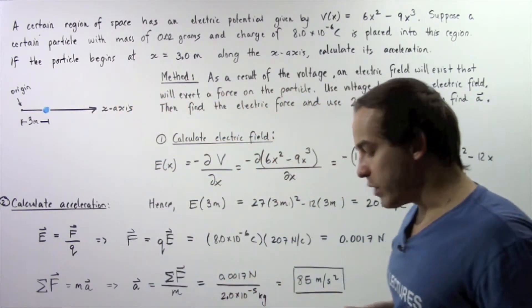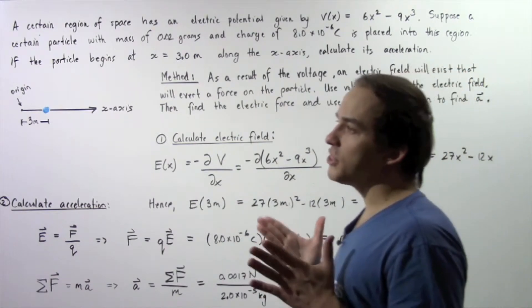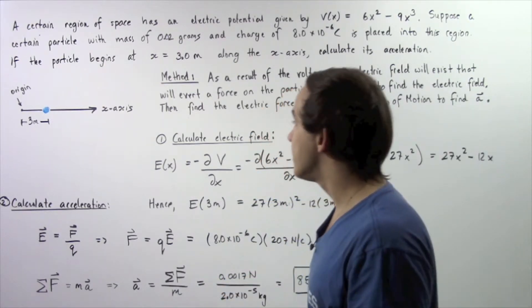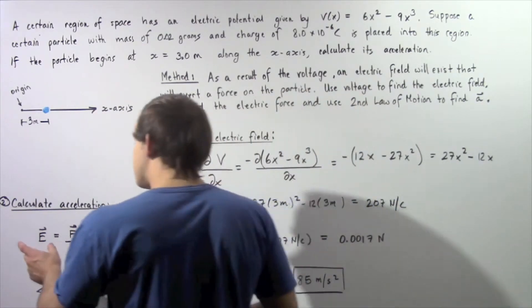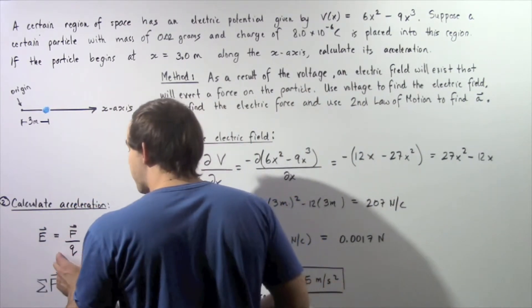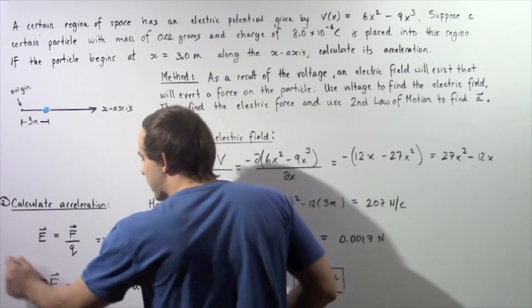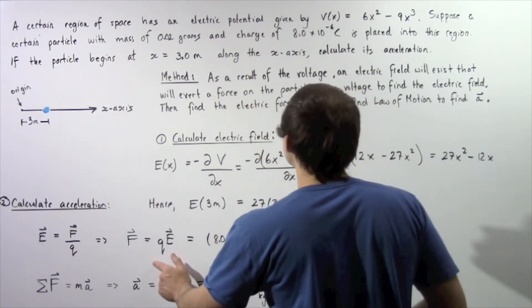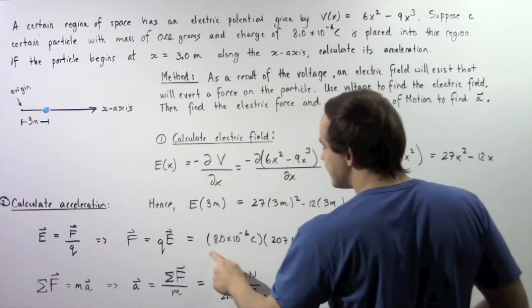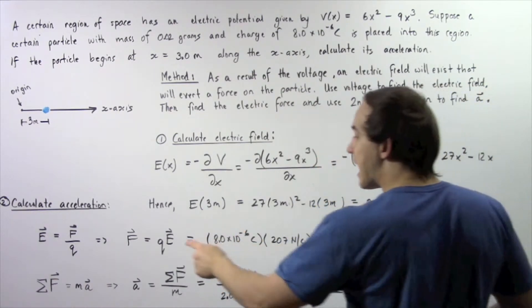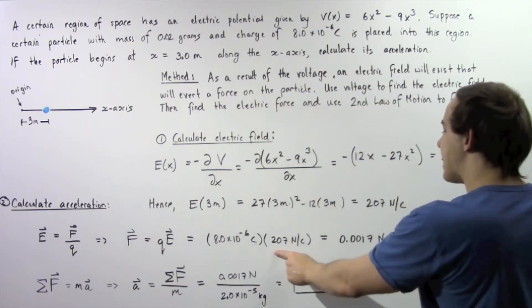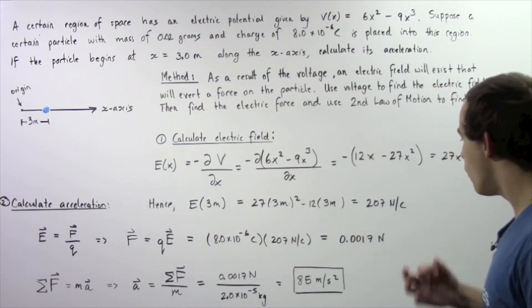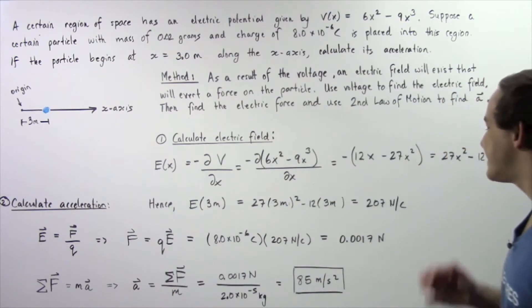Now let's move on to Step 2, where we want to calculate the acceleration. First we calculate the electric force, then apply the second law of motion. The electric field equals force divided by charge; rearranging, the force equals the product of the charge and the electric field. The charge is 8 microcoulombs, or 8 times 10 to the negative 6 Coulombs, and our electric field is 207 newtons per coulomb. Multiplying, the Coulombs cancel, leaving a force of 0.0017 newtons.